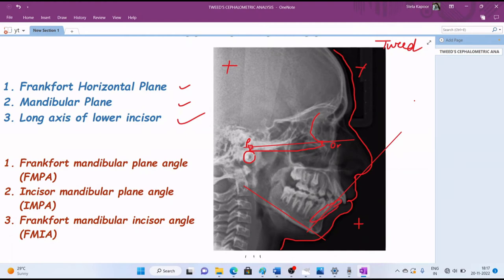On joining these lines and extending these planes backwards, what you will get are three angles. This is the FMPA, the Frankfurt mandibular plane angle, which is formed by the intersection of FH line and the mandibular plane.